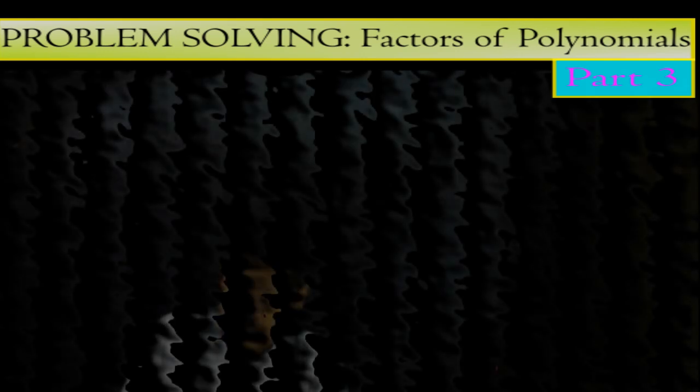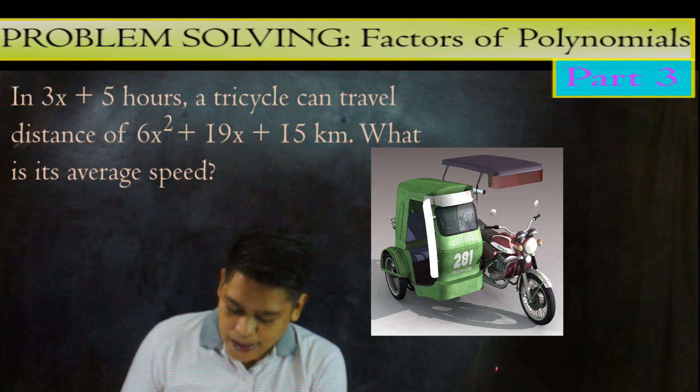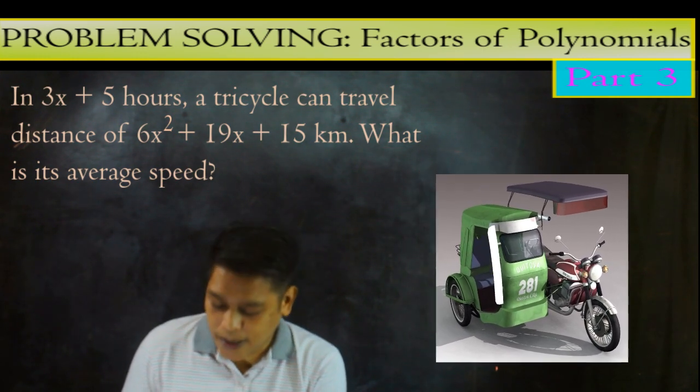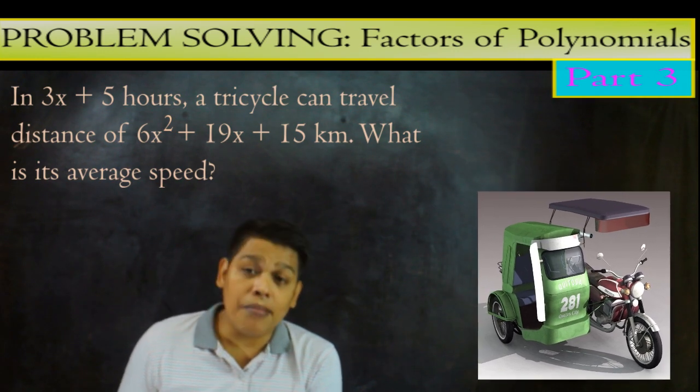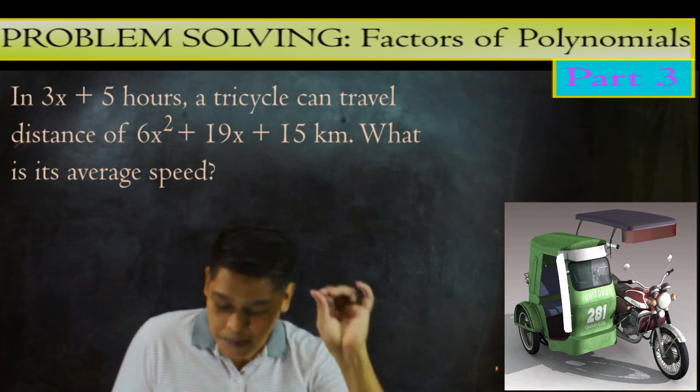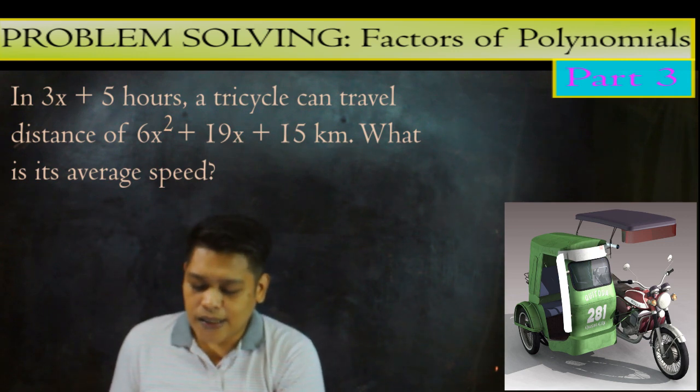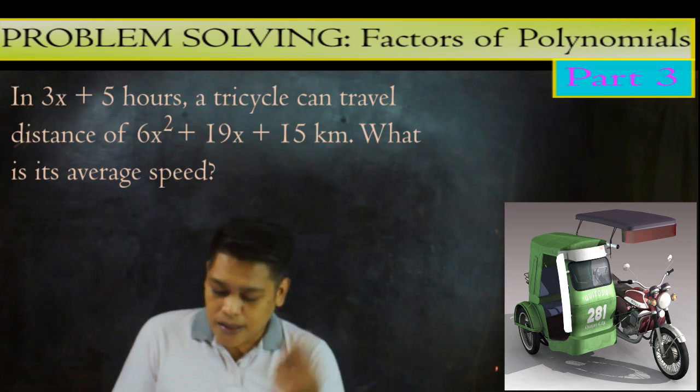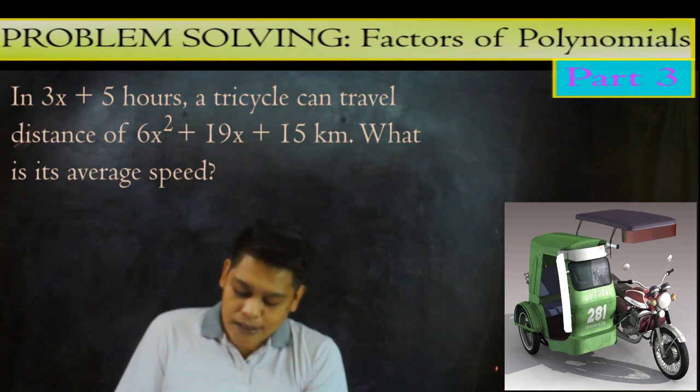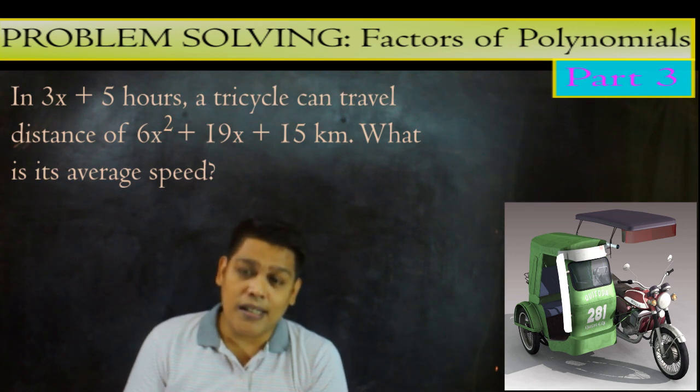Question number 2. In 3x plus 5 hours, a tricycle can travel a distance of 6x squared plus 19x plus 15 kilometer. What is the average speed? So alam natin yung distance is equivalent to speed times the time. So ayan yung pagkuhan ng distance.